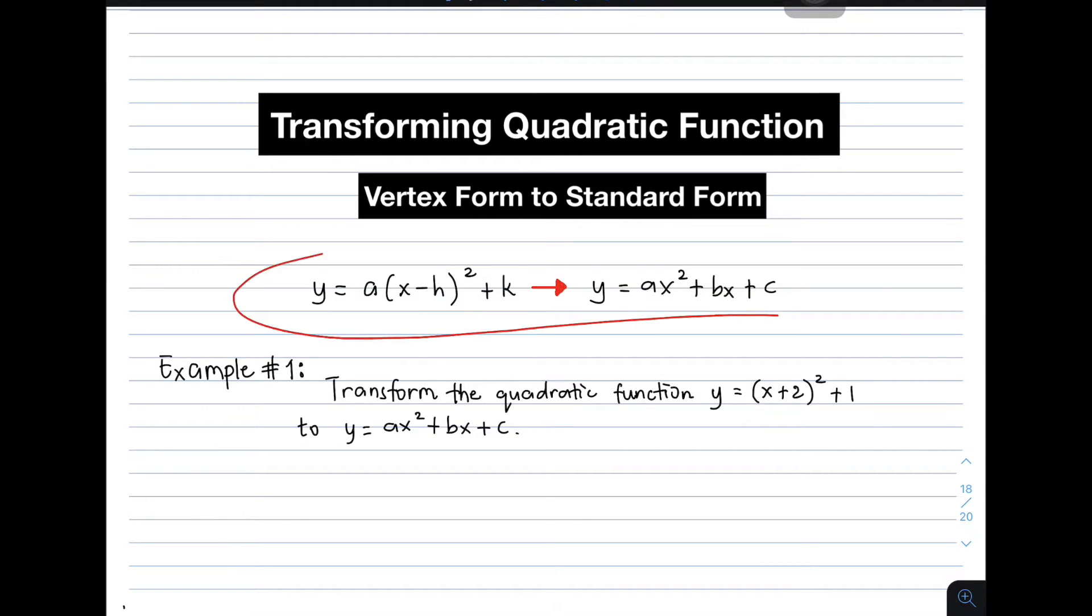We have here these two forms that we already know. This is the vertex form, y equals a times x minus h squared plus k. Our target today is to transform this equation to this form, which is the standard form, y equals ax squared plus bx plus c.